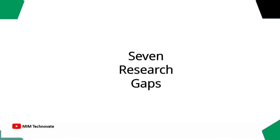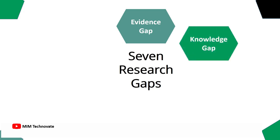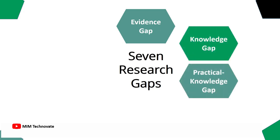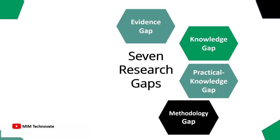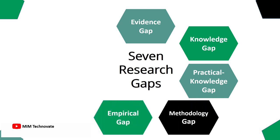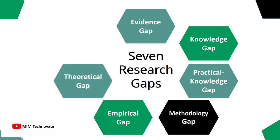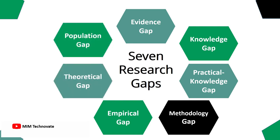The 7 research gaps are: evidence gap, knowledge gap, practical knowledge conflict gap, methodological gap, empirical gap, theoretical gap, and population gap. Let's study them in detail.